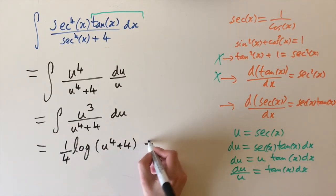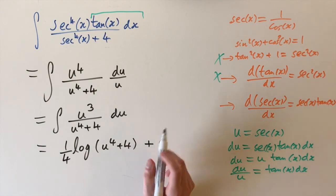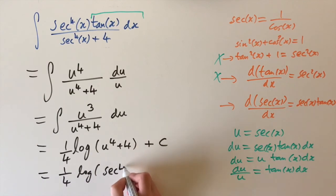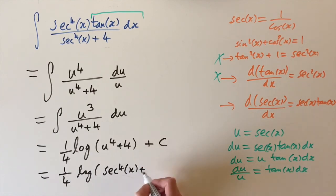We need an integration factor as well, plus c. And as always, we need to replace u how we defined in terms of x. So this is simply just one over four times the logarithm of sec to the power of four of x plus four plus c. So this is our answer.